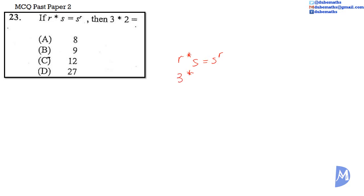Then 3 asterisk 2 is equal to 2 to the 3rd power. 2 to the 3rd power is equal to 2 multiplied by 2 multiplied by 2. 2 to the 3rd power is equal to 8.